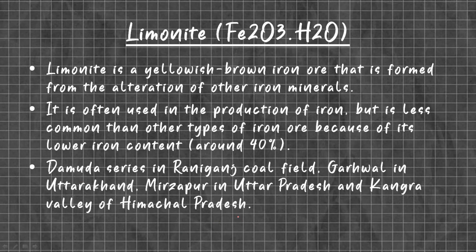Limonite. The chemical formula is Fe2O3·H2O. Limonite is a yellowish-brown iron ore that is formed from the alteration of other iron minerals. It is often used in the production of iron but is less common than other types of iron ore because of its lower iron content, which is around 40%.